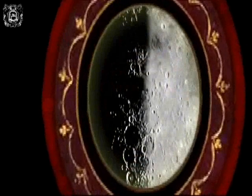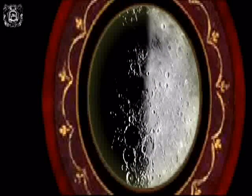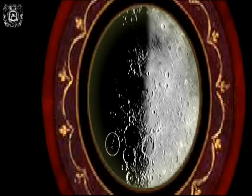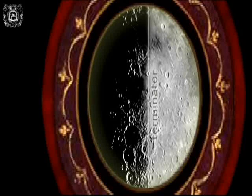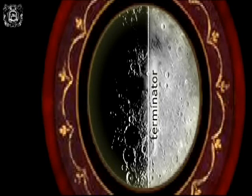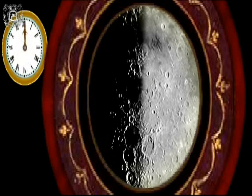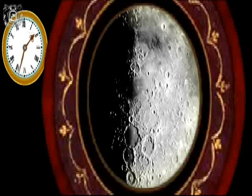Galileo had also noted the presence of small, luminous zones in the dark part of the lunar disk in proximity to the Terminator — the line of separation between the lighted part and the one in shadow. As dawn broke over the lunar surface, the luminous spots melded with the illuminated zone.